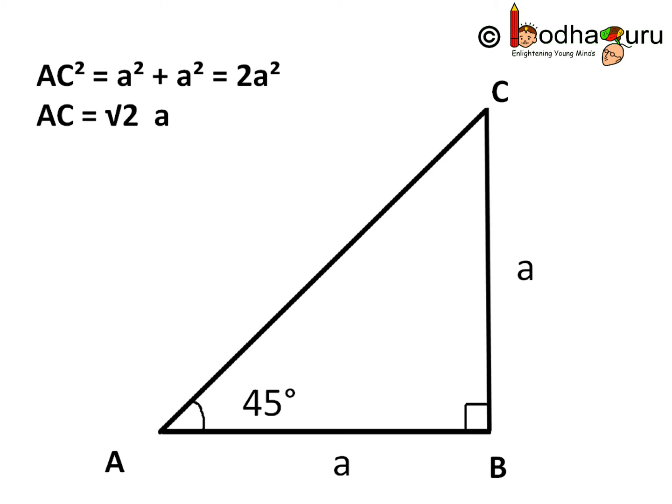AC is the hypotenuse. So AC square is equal to 2A square. Taking square root on both sides, we get AC is equal to square root of 2A.